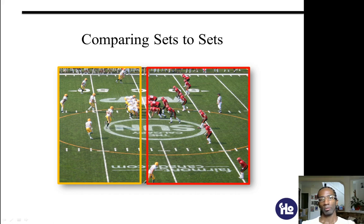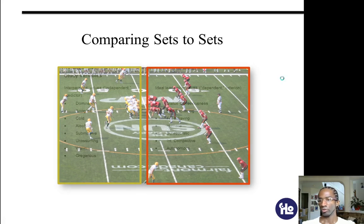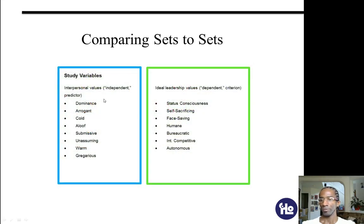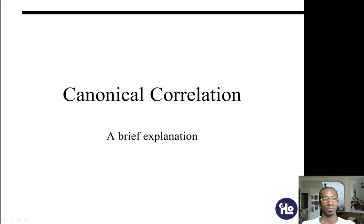So that's some of the main jargon involved in applying a canonical correlation. We're comparing sets to sets, and we can think of each of the variables inside of our variate — that's the whole package — as being like players on football teams being compared to each other.